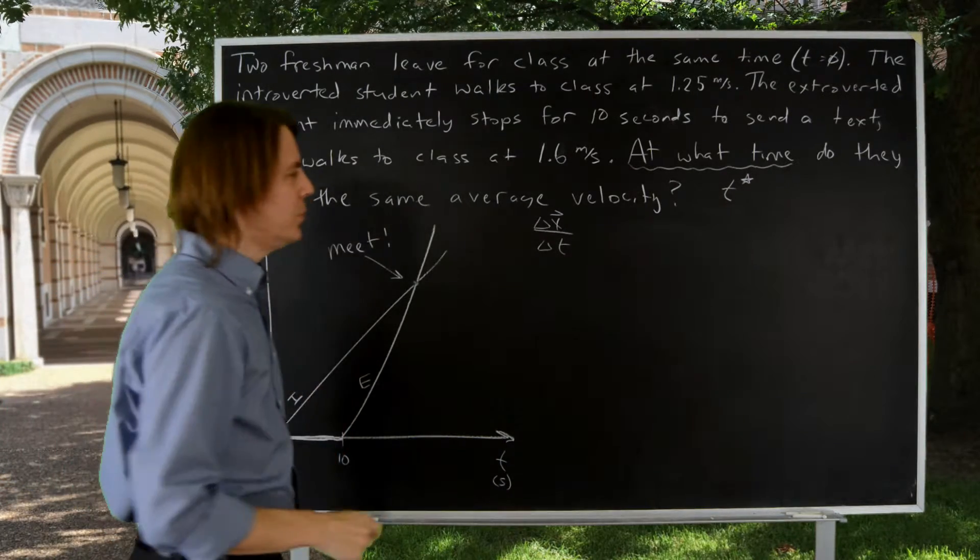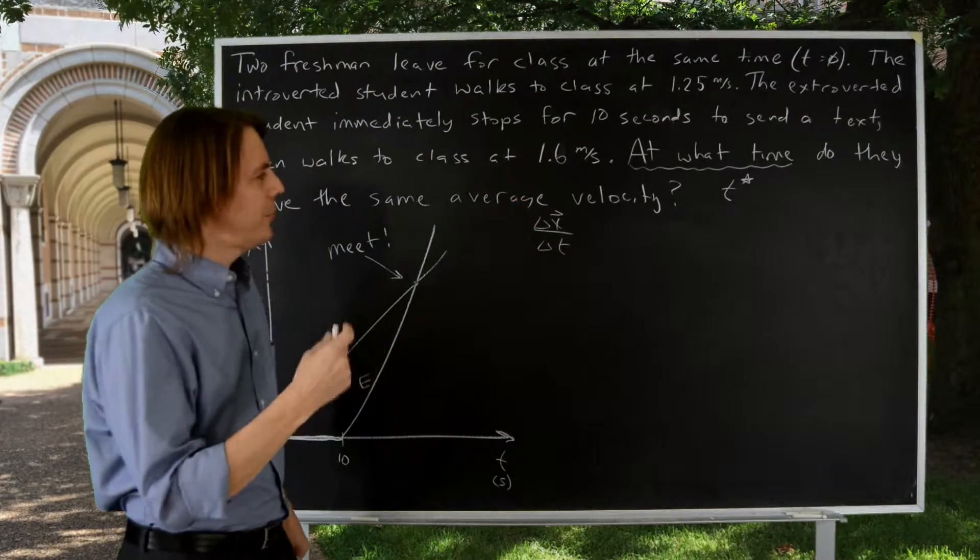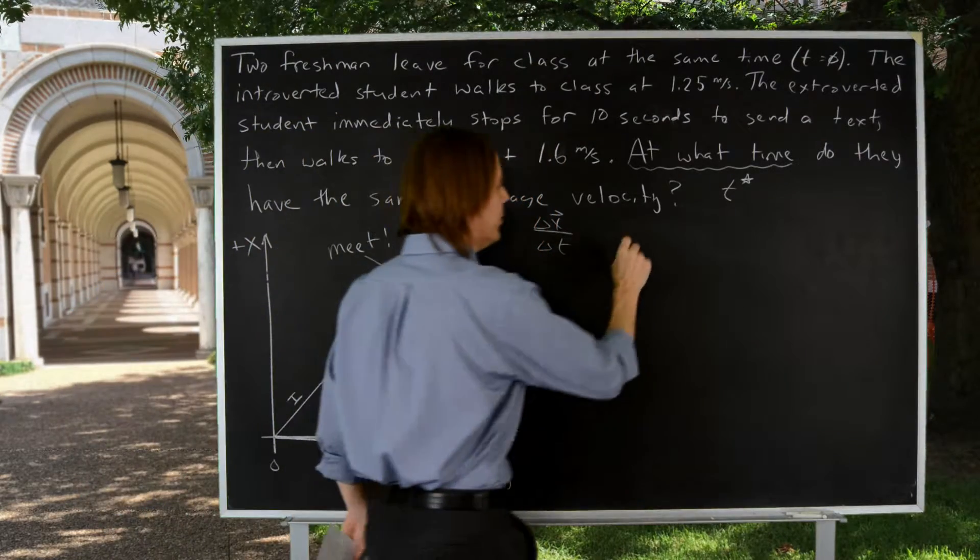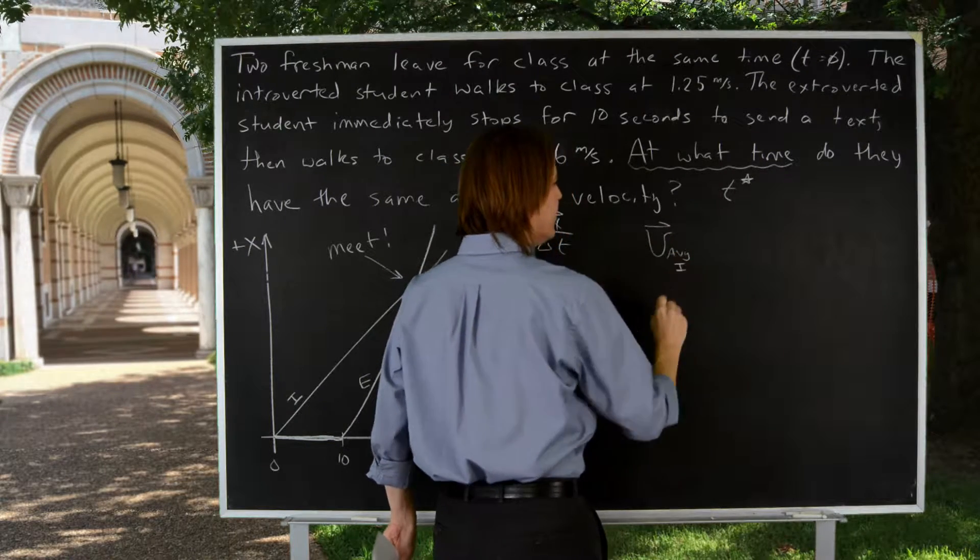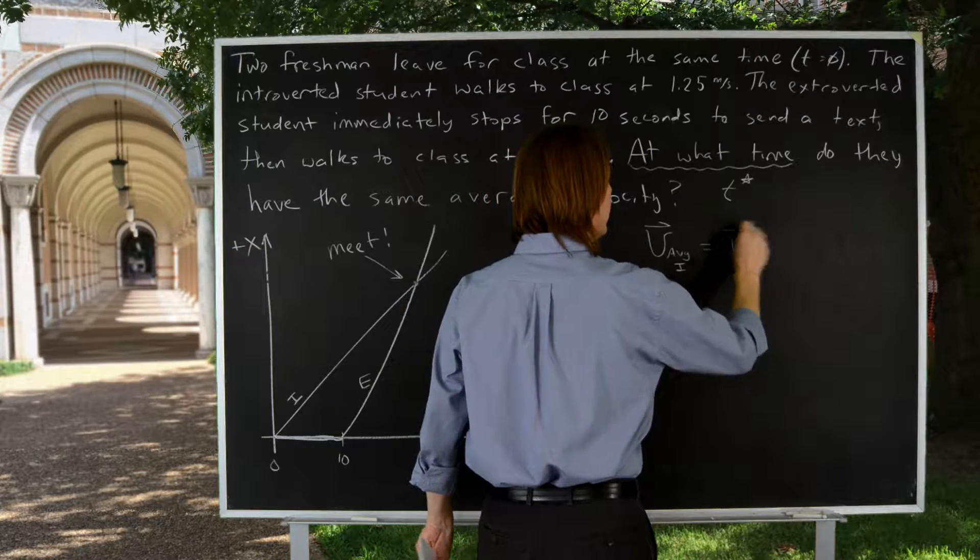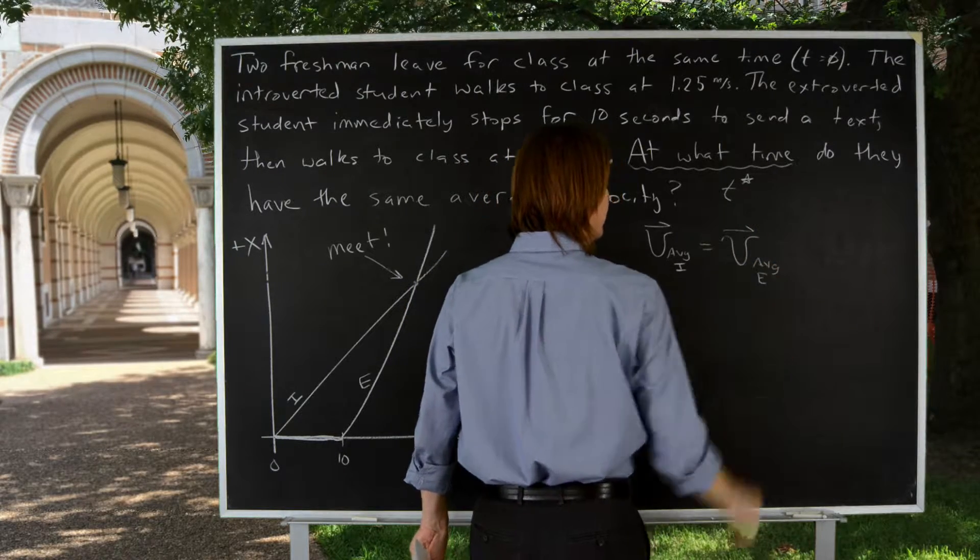Even without that insight, you could go forward, though. So let's see if we can solve this. So we're going to say the same average velocity. Let's write the average velocity for each of them. V AVG of the introverted student has to be equal to V AVG of the extroverted student.